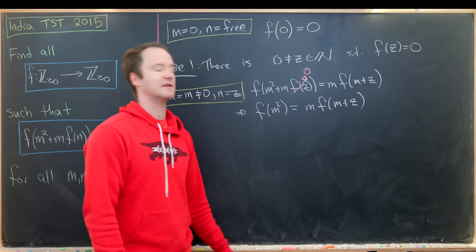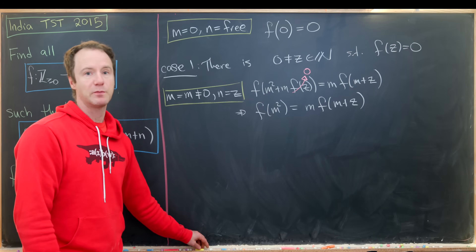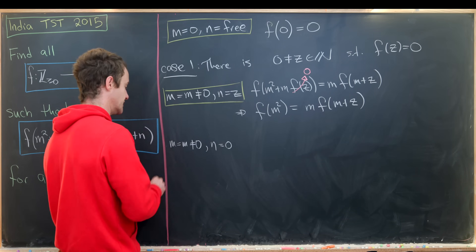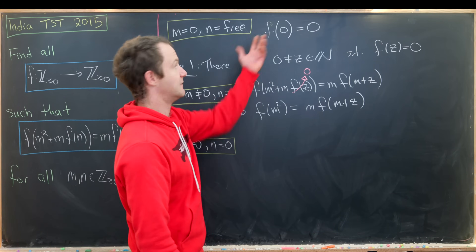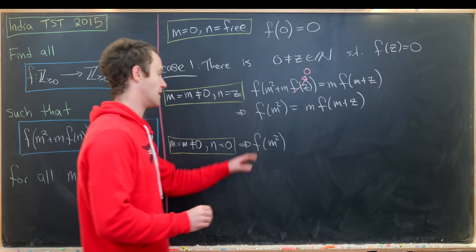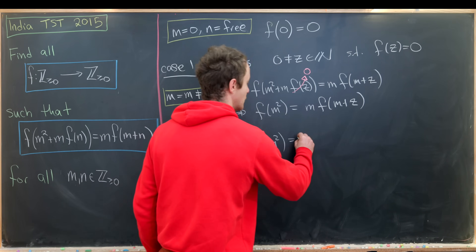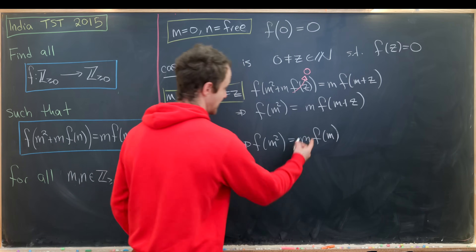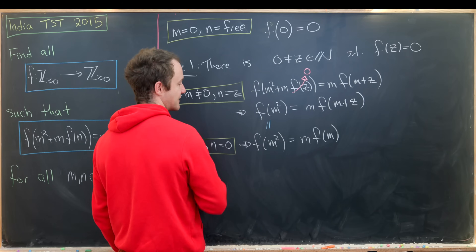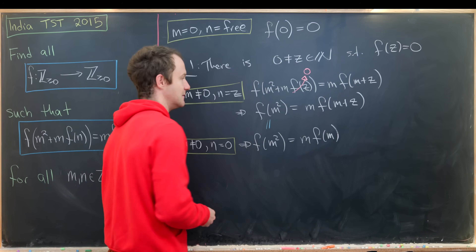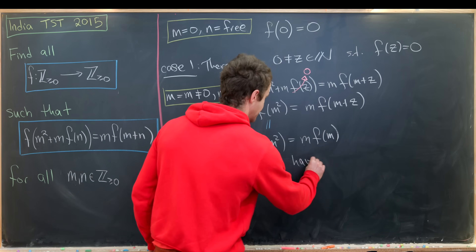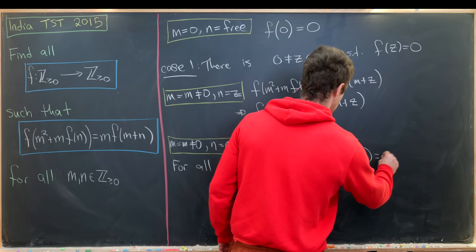Now we'll play a similar game: set m free and n equal to zero. Since f(0) = 0, that gives us f(m²) = m·f(m). We've now created two equations both equal to f(m²), meaning m·f(m) = m·f(m + z). So for all m from the non-negative integers, f(m + z) = f(m).